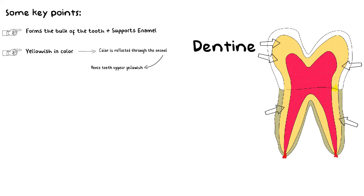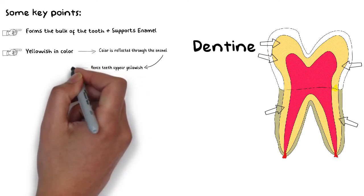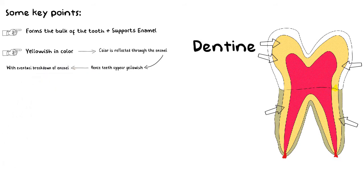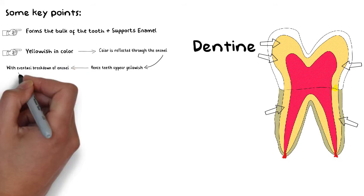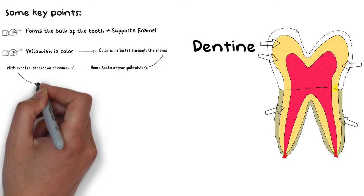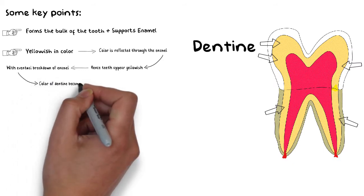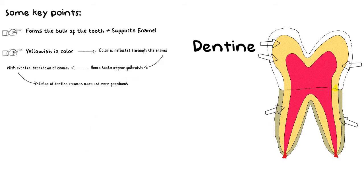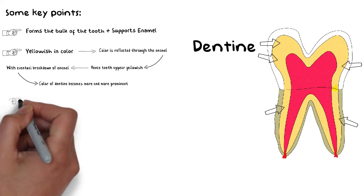Some people have thinner enamel layers, so their teeth appear more yellow, while others with thick enamel layers and less yellowish dentine have teeth that appear more white. As the enamel wears down due to caries or aging, the internal color of the dentine becomes more prominent and the teeth start to appear more yellowish. Most celebrities undergo treatments so their teeth appear white, but the natural color of our teeth has a yellowish tint.